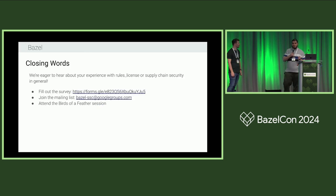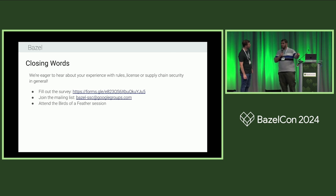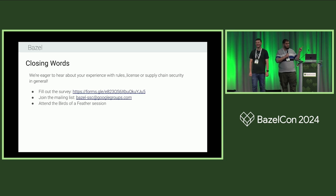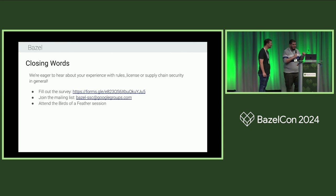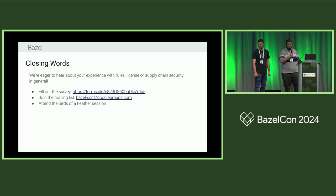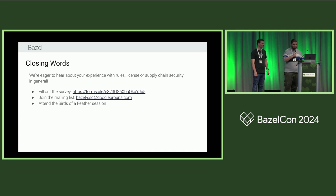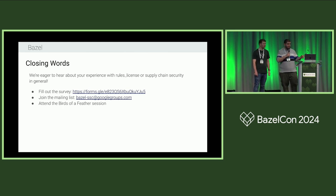Some closing words: we've launched a survey you can get to by scanning the QR code — we're going to share it on the Supply Chain Security Slack channel. The slides are also accessible online. You can also join the mailing list at Bazel SCC Google Groups. After a quick break, in about 15 minutes, we'll have a Birds of a Feather session where we'll talk more extensively about rules_license and its future.